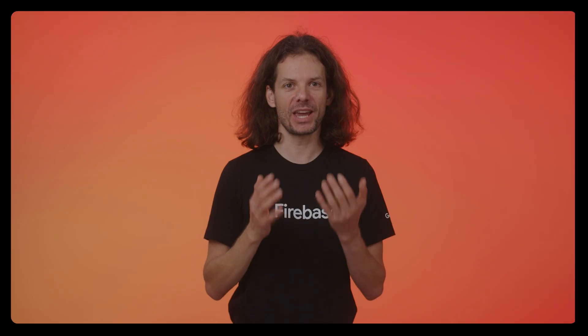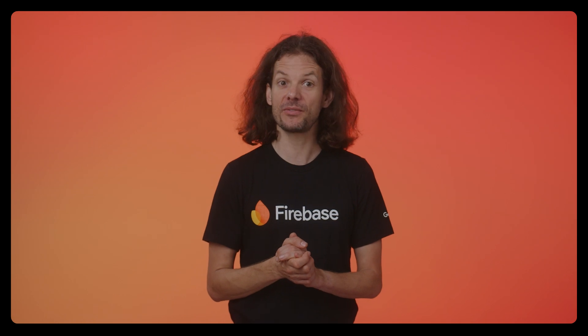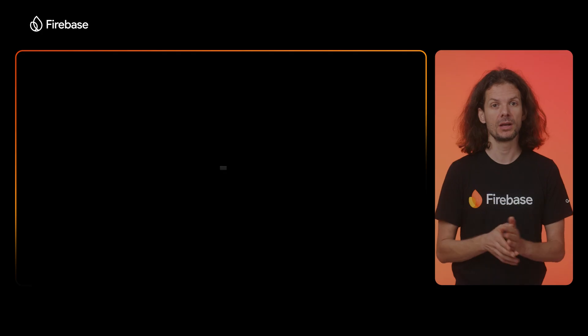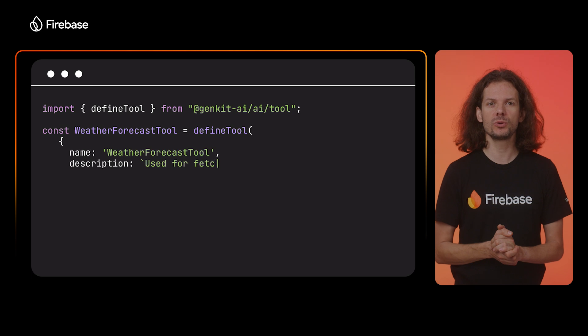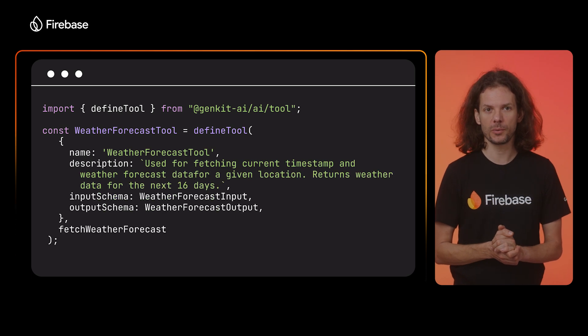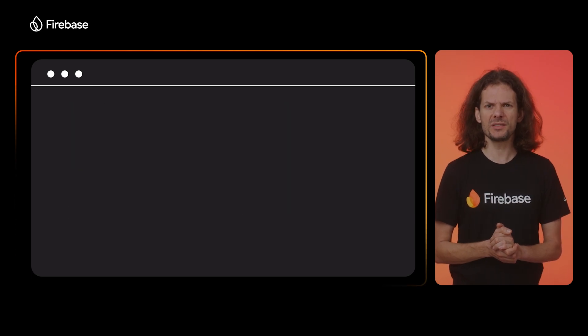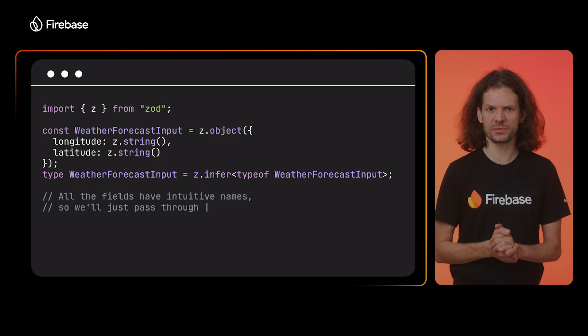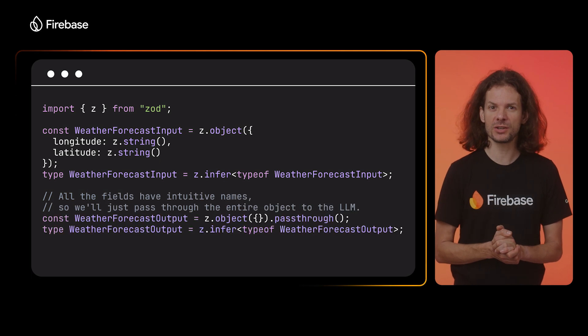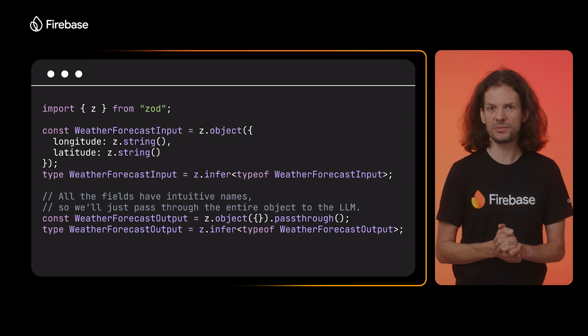Let's take a look at how this works. Here in the documentation, I can see that in order to implement function calling, I need to define a tool. I am going to define a tool called weather forecast. In order to fetch the weather for a specific location, we'd need the longitude and latitude coordinates. So let me define these as input parameters for the tool.